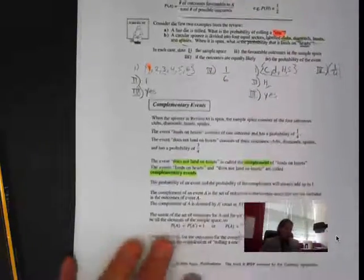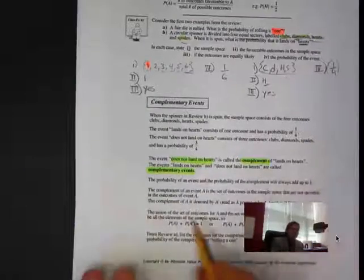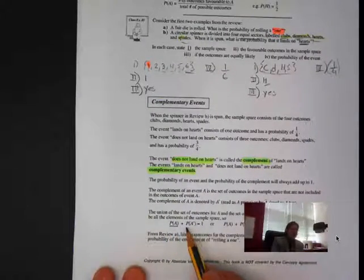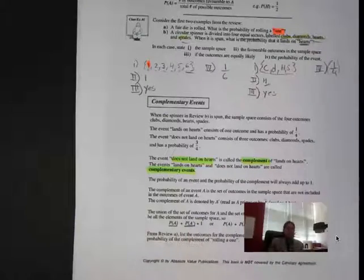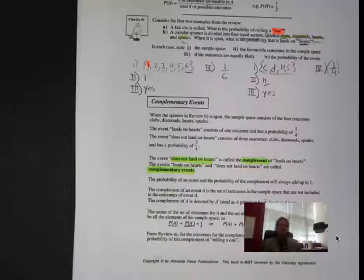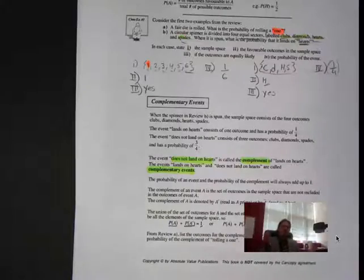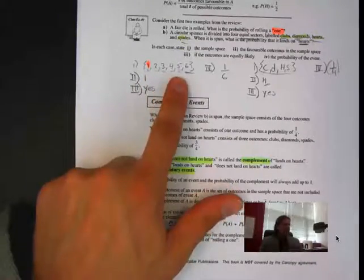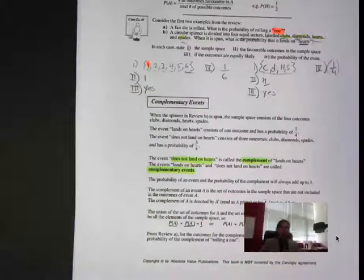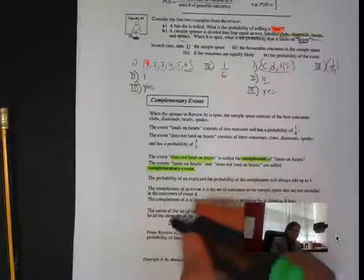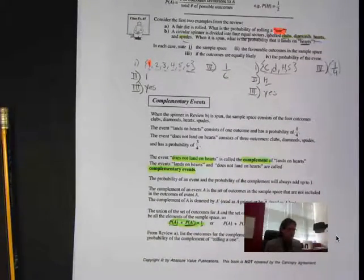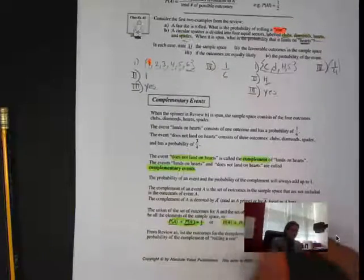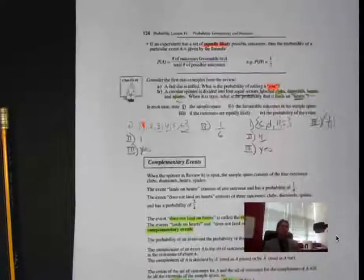The event we want plus the events we don't want must always equal 100%. So P(A) and P(A') must be equal to one, which is 100%. We can't say a two and a one are complementary events alone — the full complement of rolling a one includes two, three, four, five, and six. They must add up to equal one.